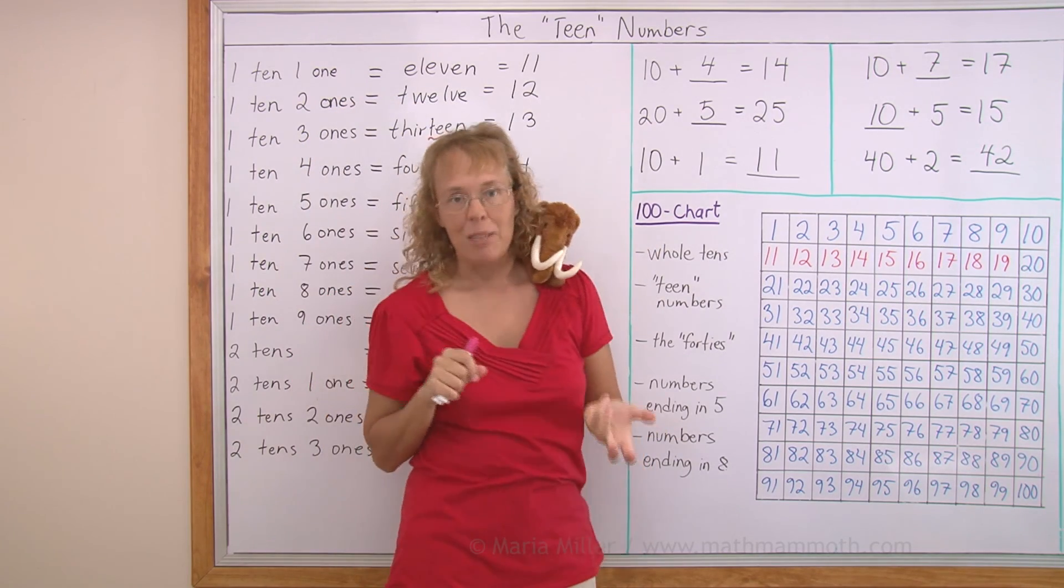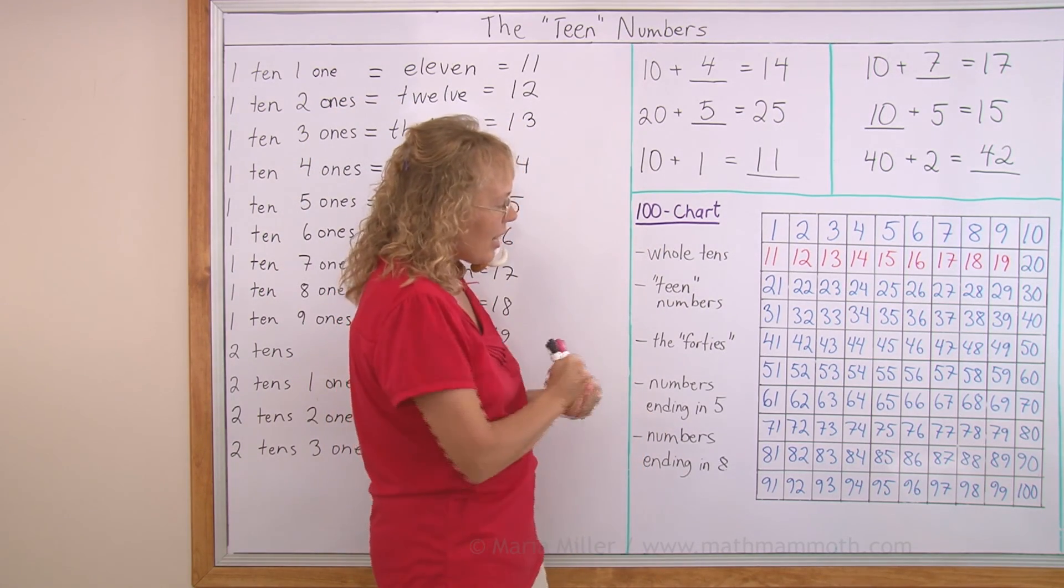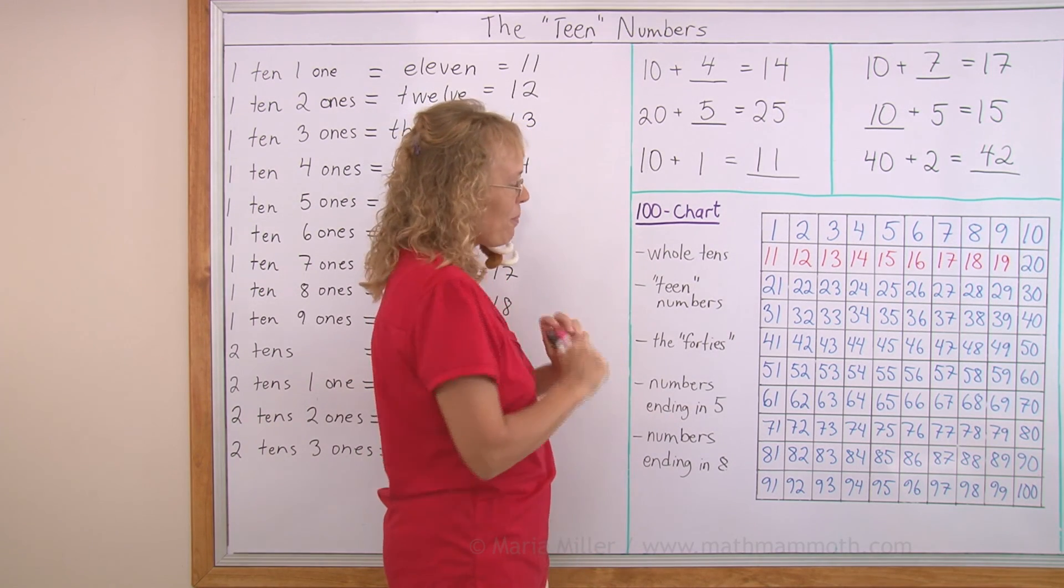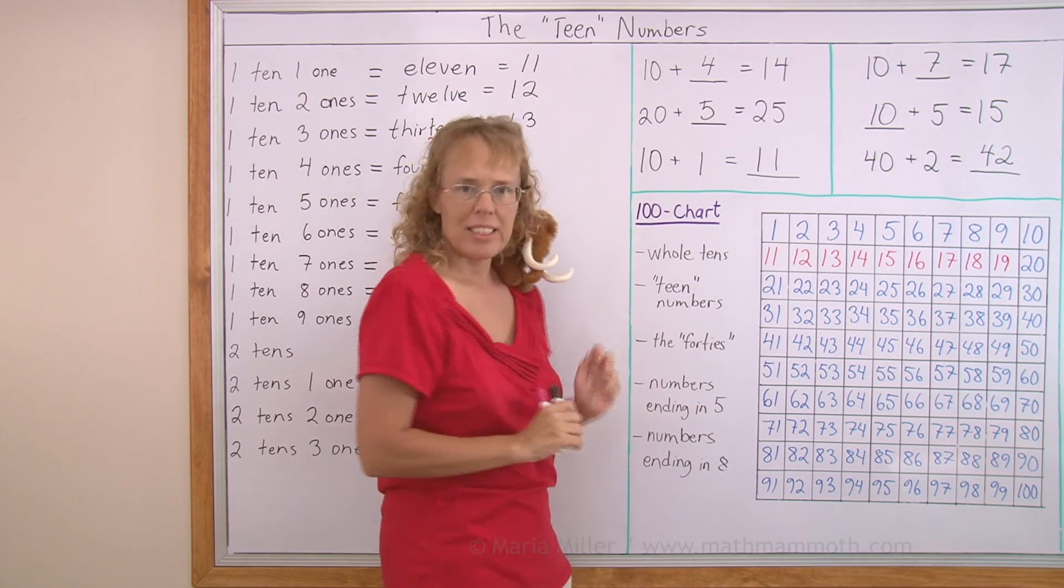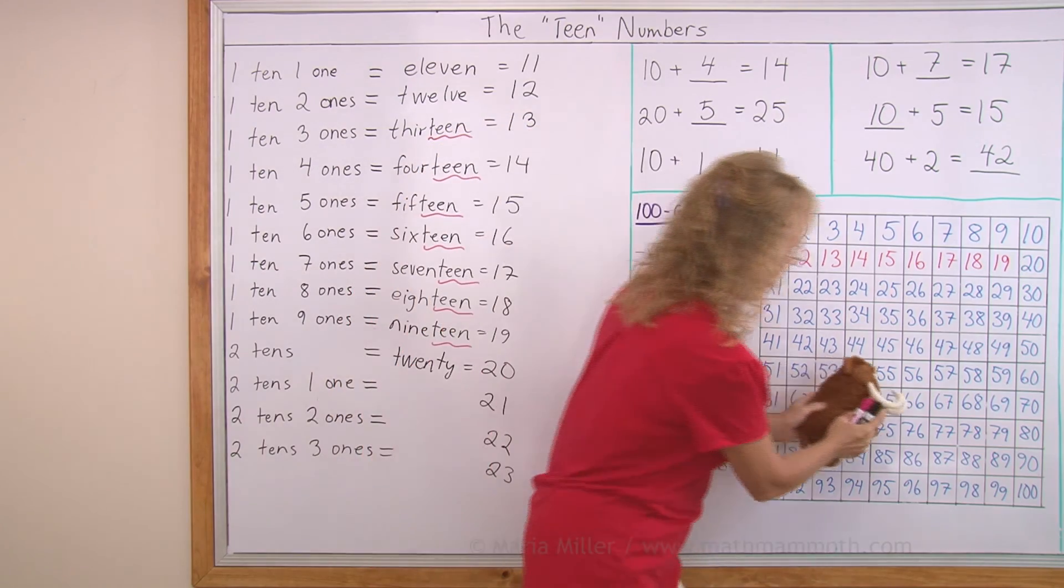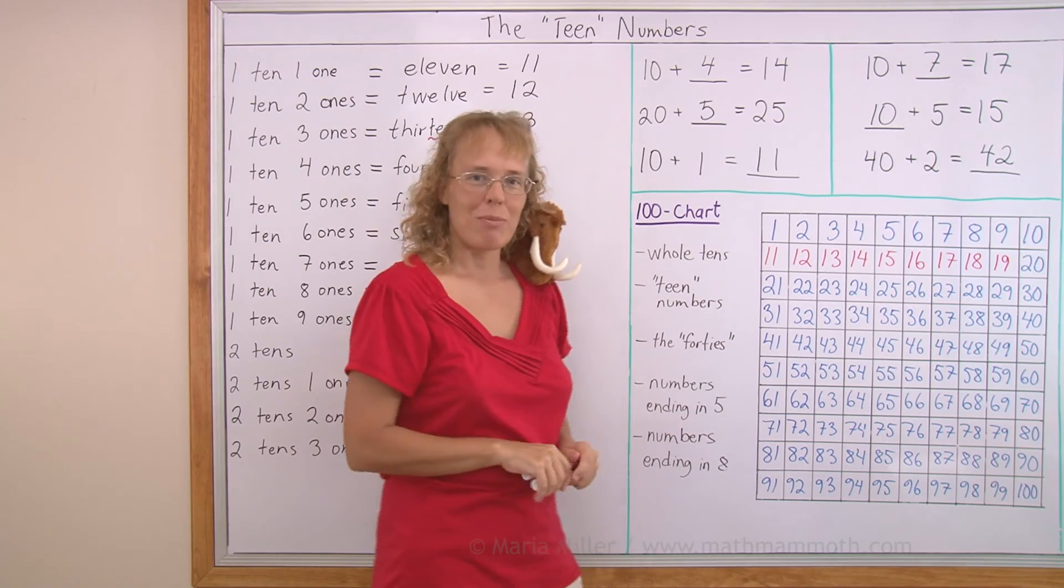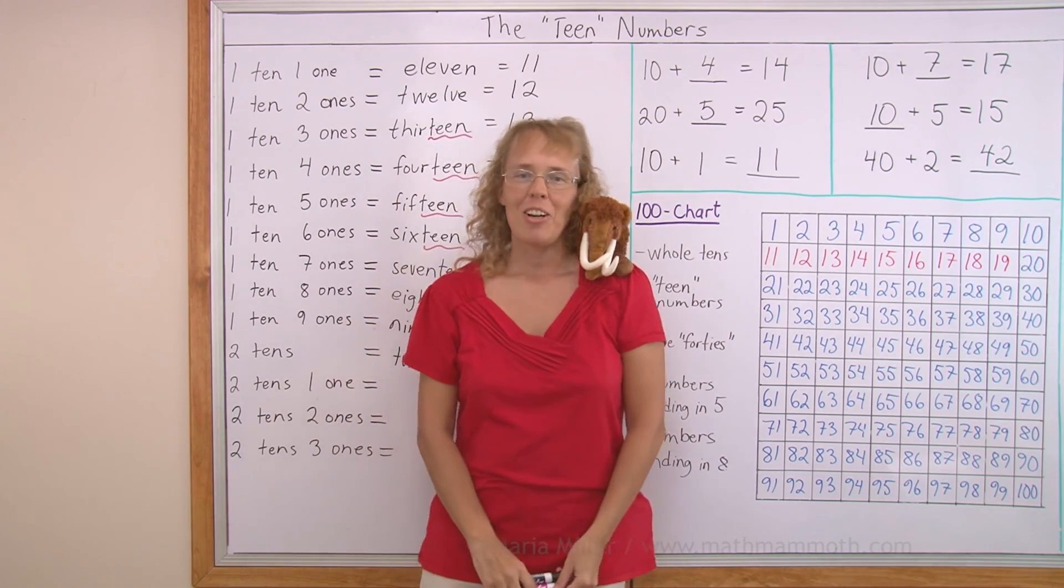You can make a game with a 100 chart, and that is you just tell your friend or teacher to find a number. Such as Matthew, go find 65. There it is, right. And then you take turns finding numbers on the chart. Okay, we are all done with this lesson.